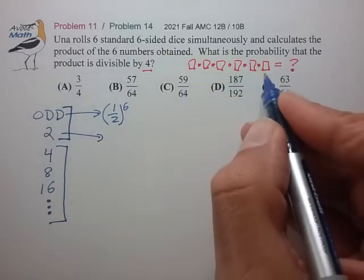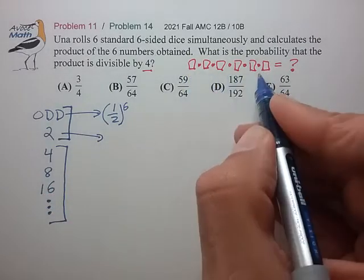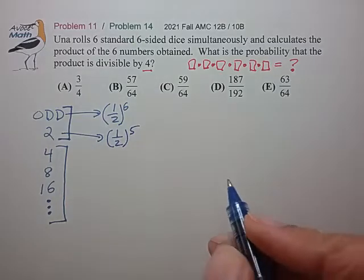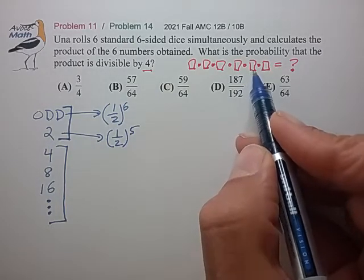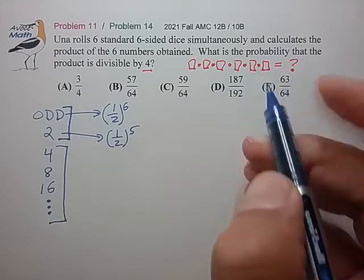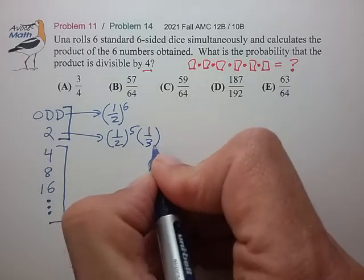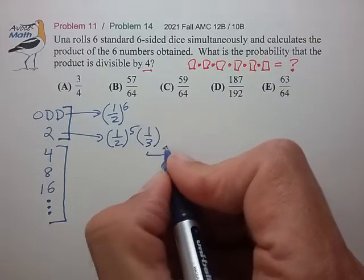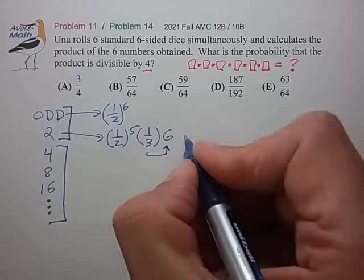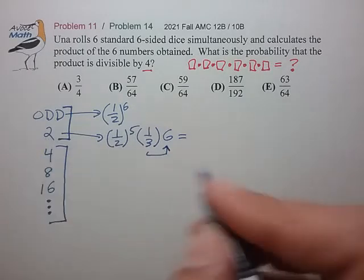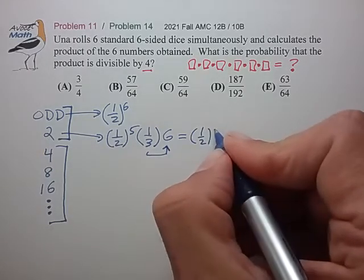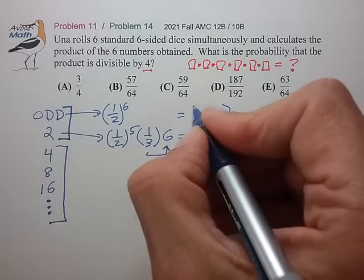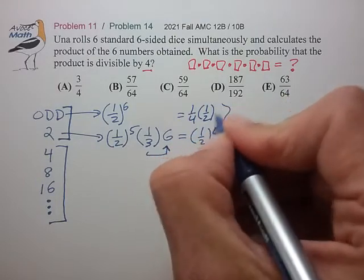For this product to have one factor of 2 means that five of the dice are odd, and the probability of that is (1/2)^5. One of the dice will have to be either 2 or 6, and the probability of that is 1/3, but that die could appear in any of these six positions, so we include a factor of 6 for that. The probability that it contains just one factor of 2 is then (1/2)^4. We're going to want to add these two values, so let's write that as (1/4) × (1/2)^4.